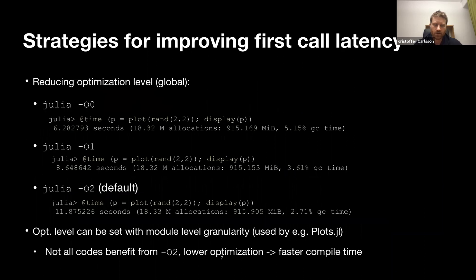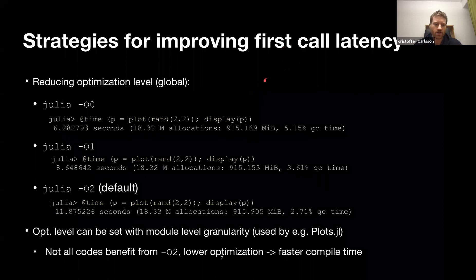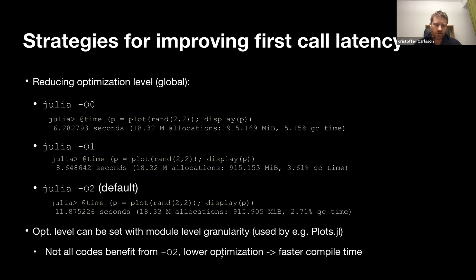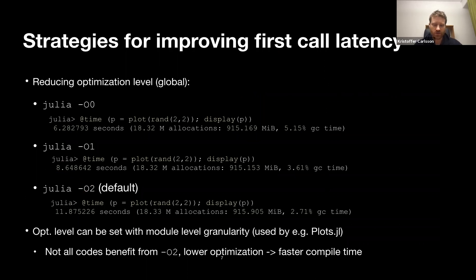Now let's look at first-call latency. One way to reduce it is to lower the optimization level. Julia has optimization level flags: O0, O1, O2. Running with O0 gives 6 seconds, O1 gives 0.8 seconds, and O2 (the default) gives 11 seconds for that first plot. So reducing the optimization level is one way to reduce latency.